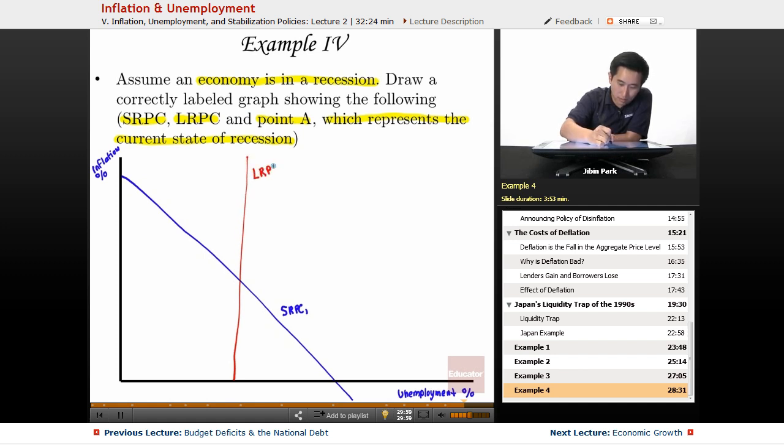You draw the SRPC here - SRPC one - and you have the LRPC - LRPC one. Now, this is the NIRU - the non-accelerating inflation rate of unemployment.